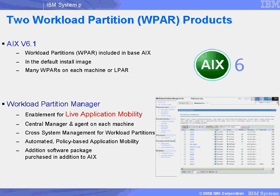This allows you to create a couple of thousand workload partitions on each copy of AIX. The second part is called the Workload Partition Manager. This is an extra software package that needs to be purchased, and this gives you a number of things, including the live application mobility — the way we can move a workload partition from one machine to another. It also gives you a graphical user interface, and an automated policy-based way of managing your workload partitions, so it will automatically move a partition if necessary.